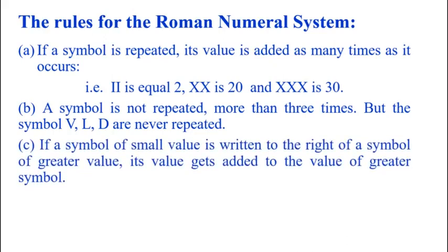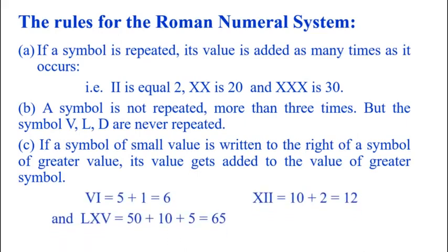If a symbol of small value is written to the right of a greater value, its value gets added to the value of greater symbol. For example, VI is 5 plus 1 that is equal to 6. XII is 10 plus 2 is equal to 12. And LXV, L is for 50, X is 10 and V is 5, so 50 plus 10 plus 5 that is equal to 65.